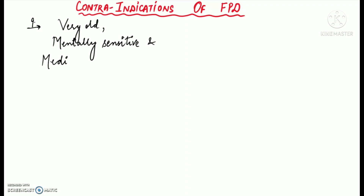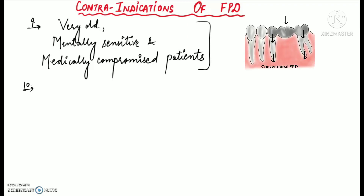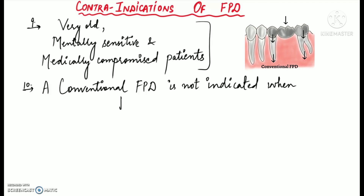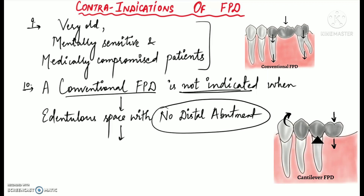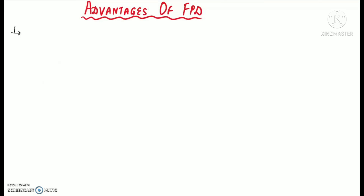A conventional fixed partial denture is not indicated when there is an edentulous space with no distal abutment; in such cases a cantilever FPD is indicated. A cantilever FPD is a prosthesis given when abutments are present only on one side of the edentulous space. A detailed video on cantilever FPDs is available and linked in the description box below. Now let's talk about the advantages of fixed partial dentures.